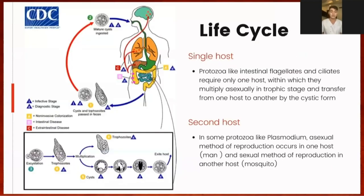For the life cycle of Protozoans, some Protozoans complete their life cycle in a single host. Others, such as Plasmodium, may require a second host, in which asexual reproduction occurs in one host — man in the case of Plasmodium — and sexual reproduction in another host — the mosquito or vector.